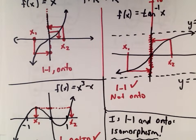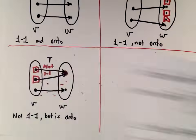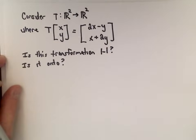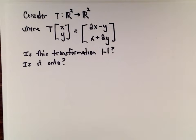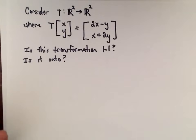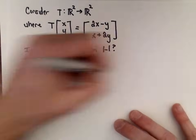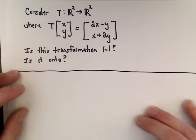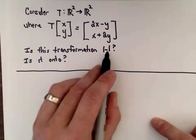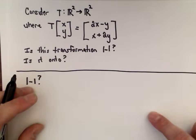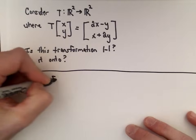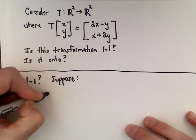Now let's look at two examples where we determine if a transformation is one-to-one and onto. I should give a disclaimer: there are other ways to do this — you can talk about the kernel of the transformation — but this is a straightforward algebraic approach. It's not necessarily the most efficient, but it works. First, we want to know if the transformation is one-to-one.